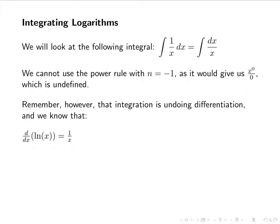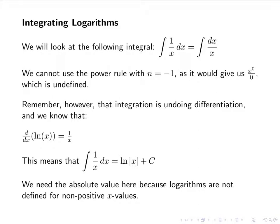This is a special case. What we want to remember is that integration is undoing differentiation. If we remember things about logarithms, we have the derivative of ln of x is 1 over x. This means that the integral of 1 over x dx is ln of the absolute value of x plus c. We need the absolute value of x because we cannot take the logarithm of something that's negative — x could be negative in our integration, so we need to remember that ln of a negative doesn't make sense.